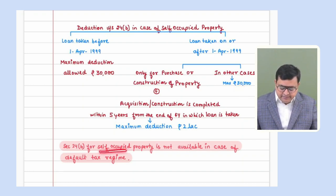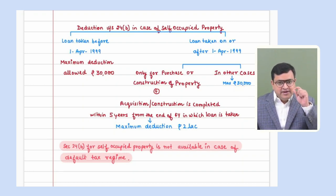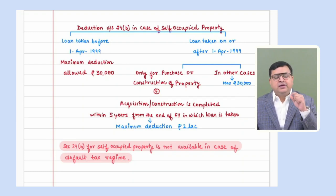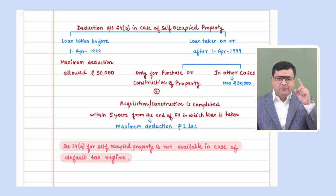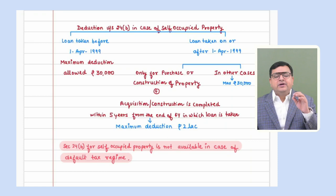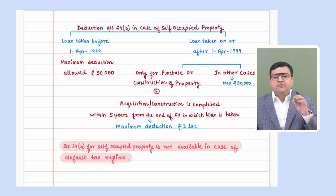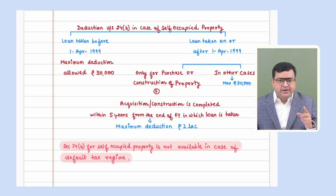Please remember 24B — it is very important. It can come in MCQ or descriptive/practical questions. Please remember: if you are following default tax regime, do not give 24B deduction if the property is self-occupied. If it is let out, then it is allowed.